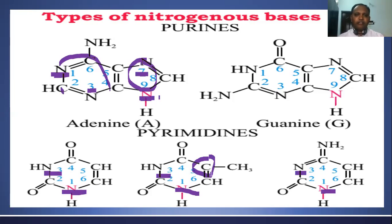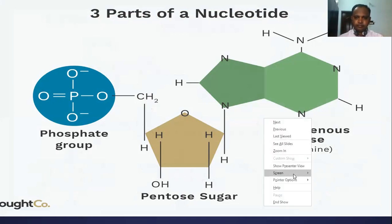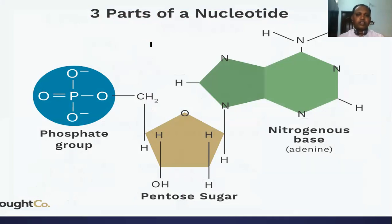Are you clear with the exact difference between purine and pyrimidine? This is a nitrogen base. Next we will see the three parts of nucleotide structure. There are three parts to each nucleotide: one nitrogen base, one pentose sugar, and one phosphate group. This complete structure is called a nucleotide.